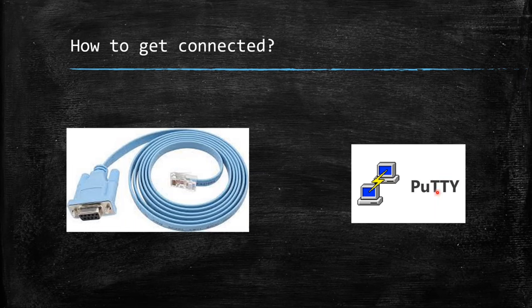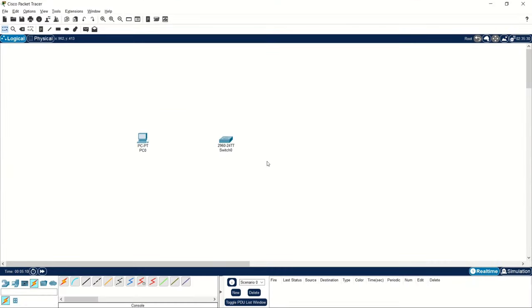The terminal emulation tool needed is PuTTY — which you may already know if you've configured a switch or router before. So those two things — the console cable and PuTTY — are required. Let me demonstrate how to connect these cables in Cisco Packet Tracer. I've opened Cisco Packet Tracer and placed one Switch 2960 and one PC for demonstration, which matches a real-life scenario.